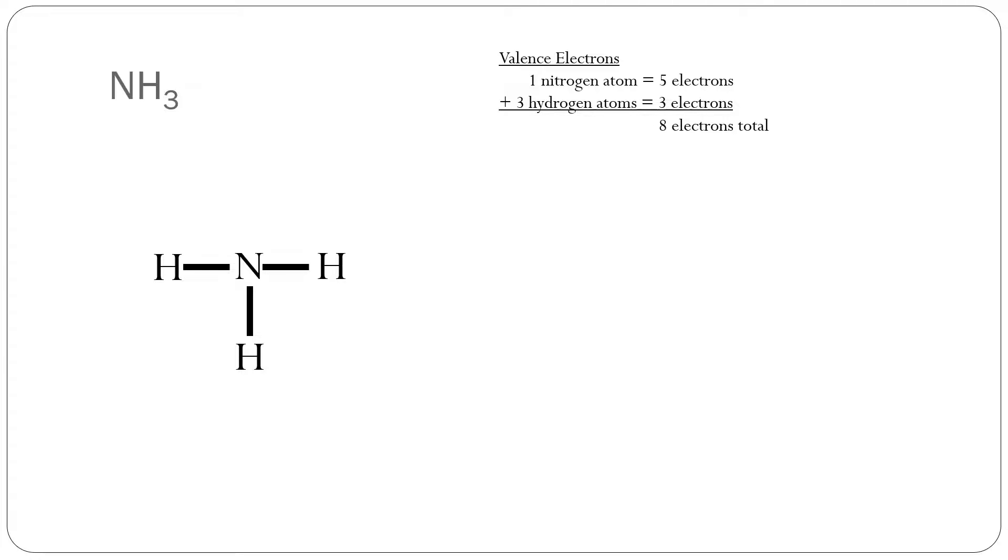Here there are three lines between nitrogen and the three hydrogen atoms. These represent the covalent bonds, or shared pair of electrons. Three bonds means there are six electrons in bonding. That leaves us with two electrons remaining.